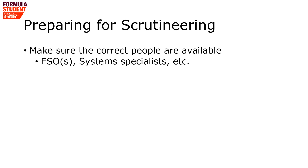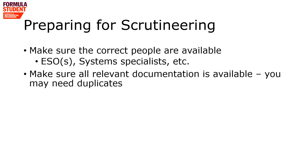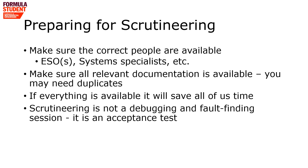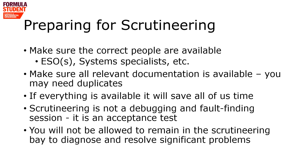Make sure you've got the right people available — your ESO and system specialists who can explain to us what is there and what's going on. Make sure all the relevant documentation is available, and you might need duplicates. If your accumulator is at accumulator scrutineering and the car is with the main scrutineering, we might want to look at the same documentation in both at the same time. If everything's available where it's needed, it's going to save all of us time. Remember that scrutineering isn't a debugging and fault-finding session — it's an acceptance test. You won't be allowed to remain in the scrutineering bay to diagnose and resolve significant problems; you'll be asked to go back to your pit, work on the car there, and then rejoin the queue.